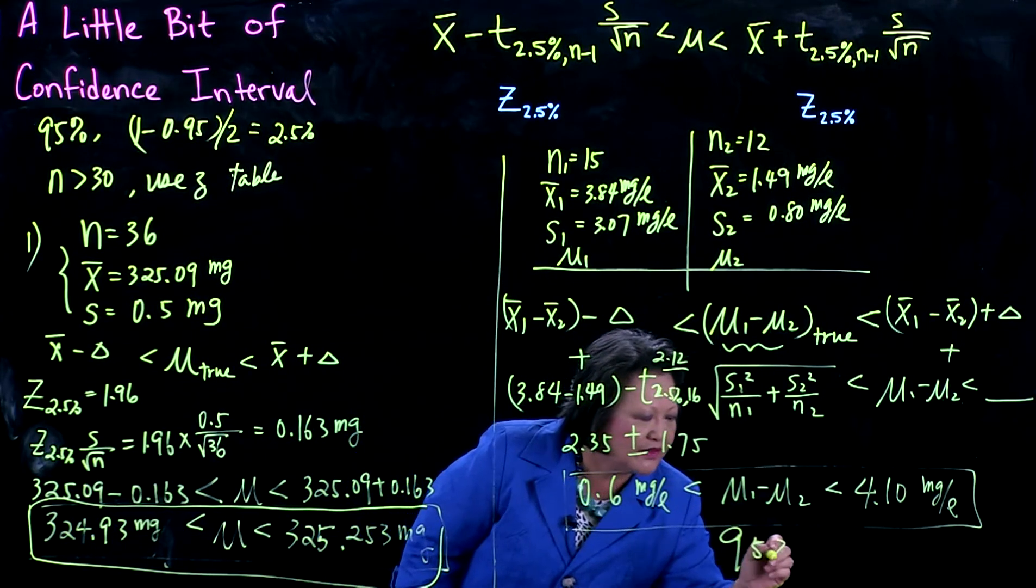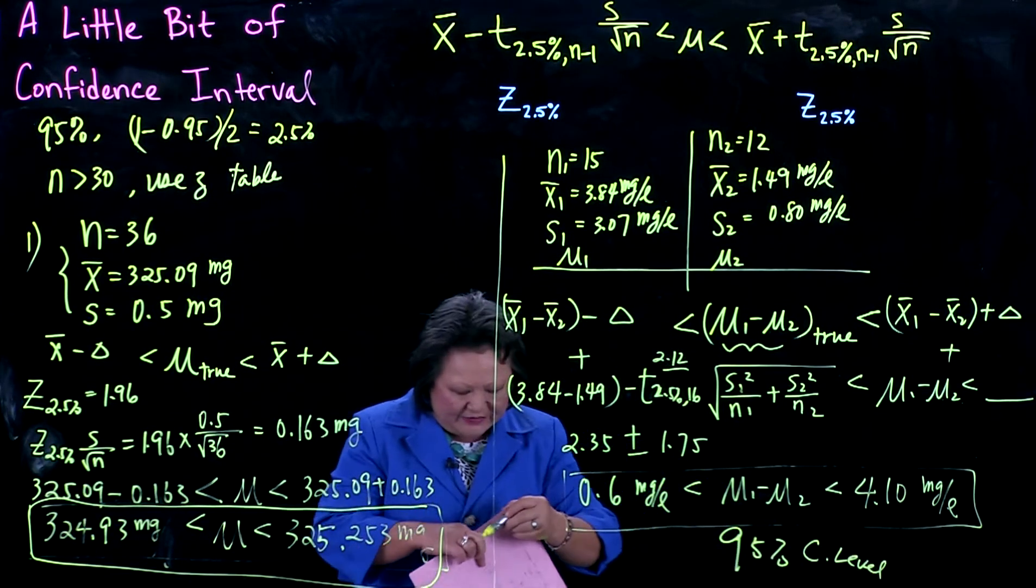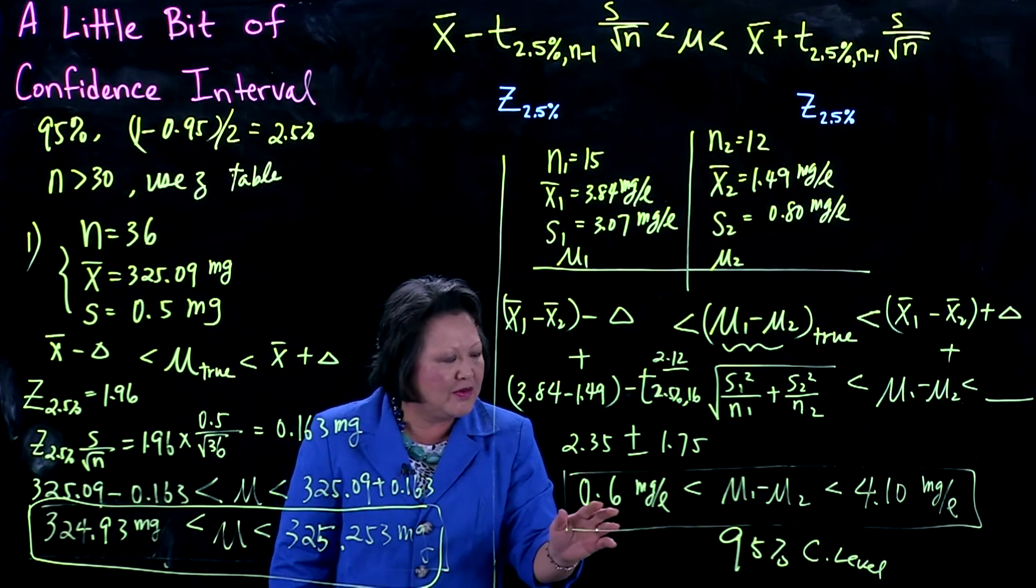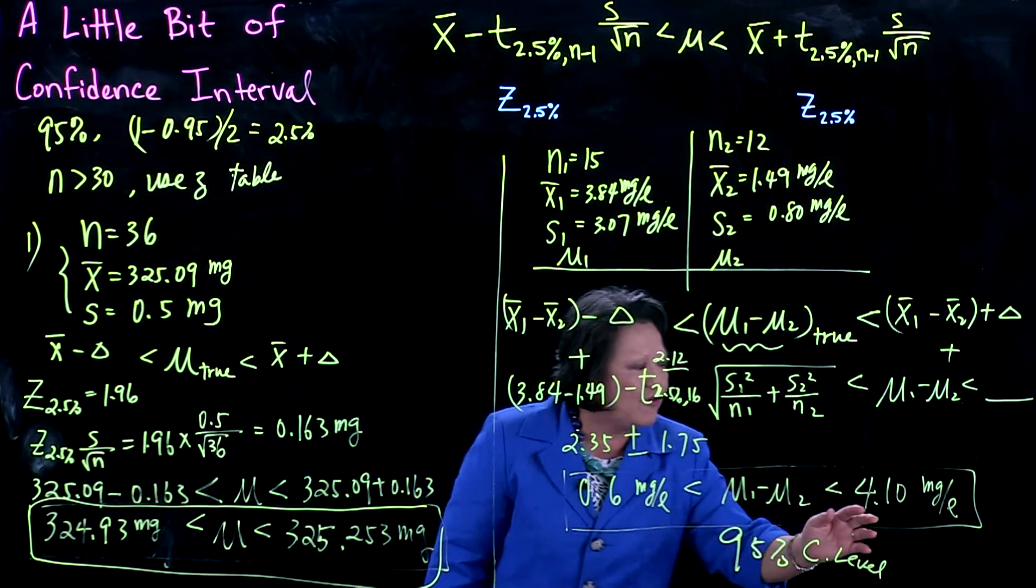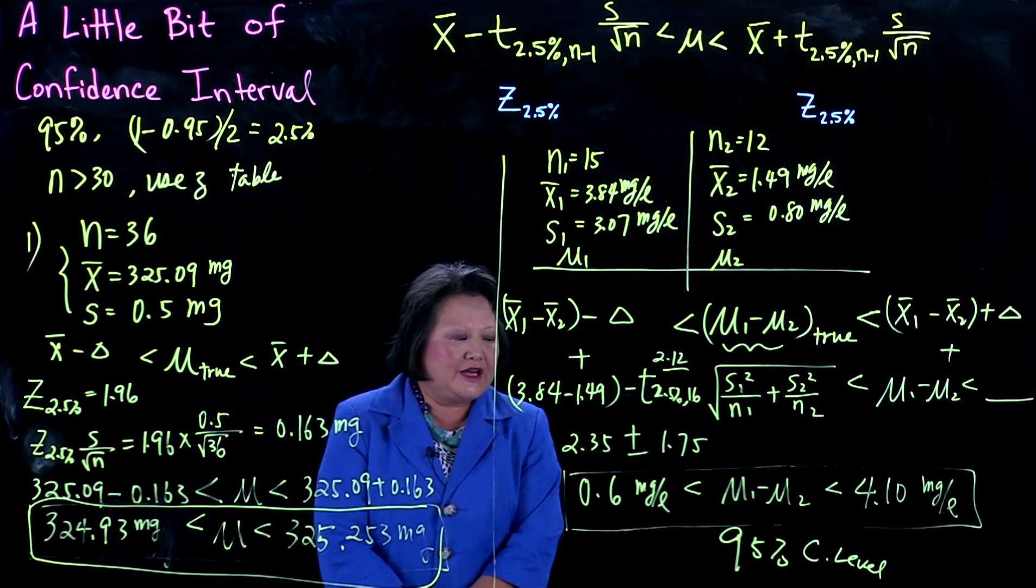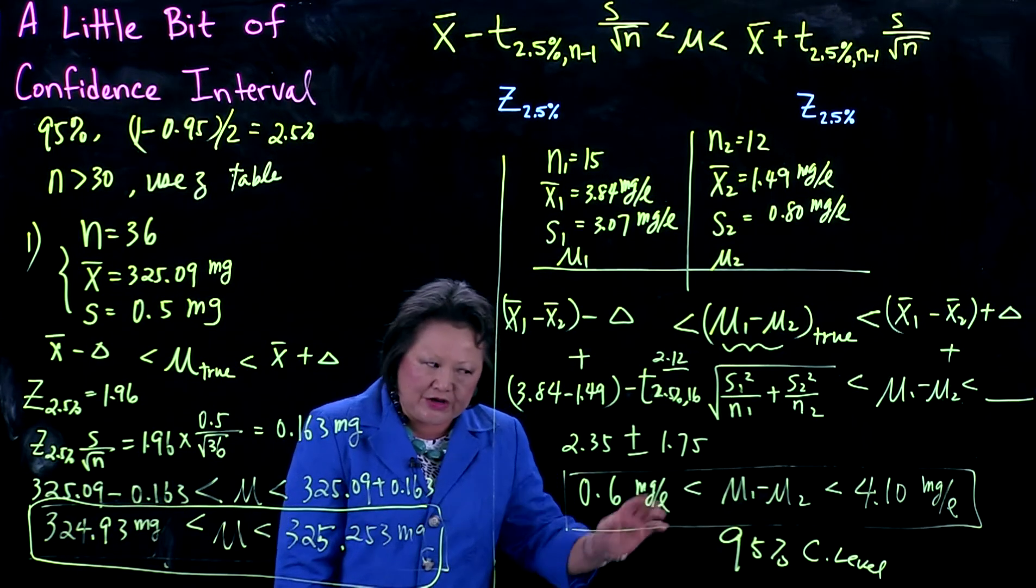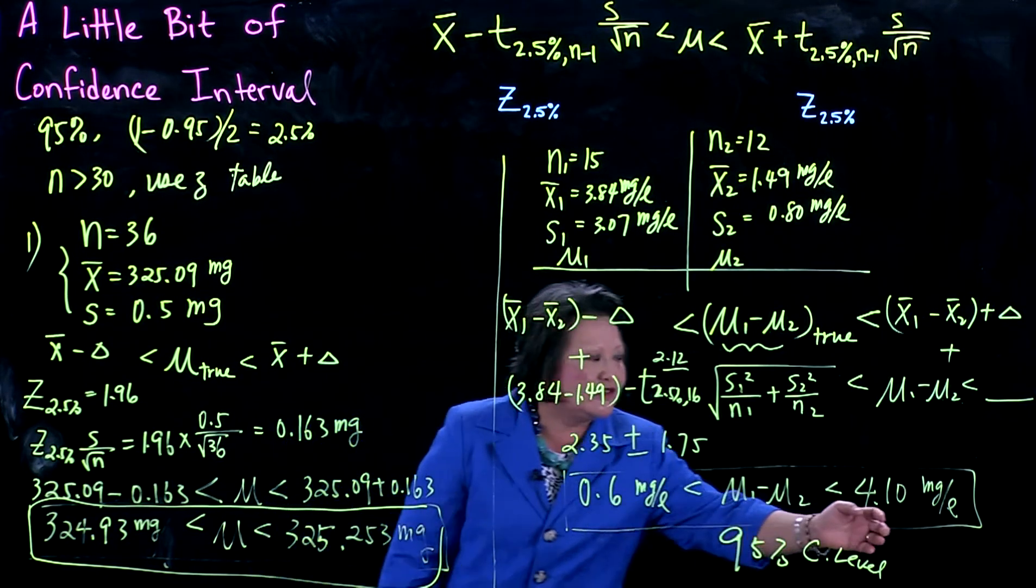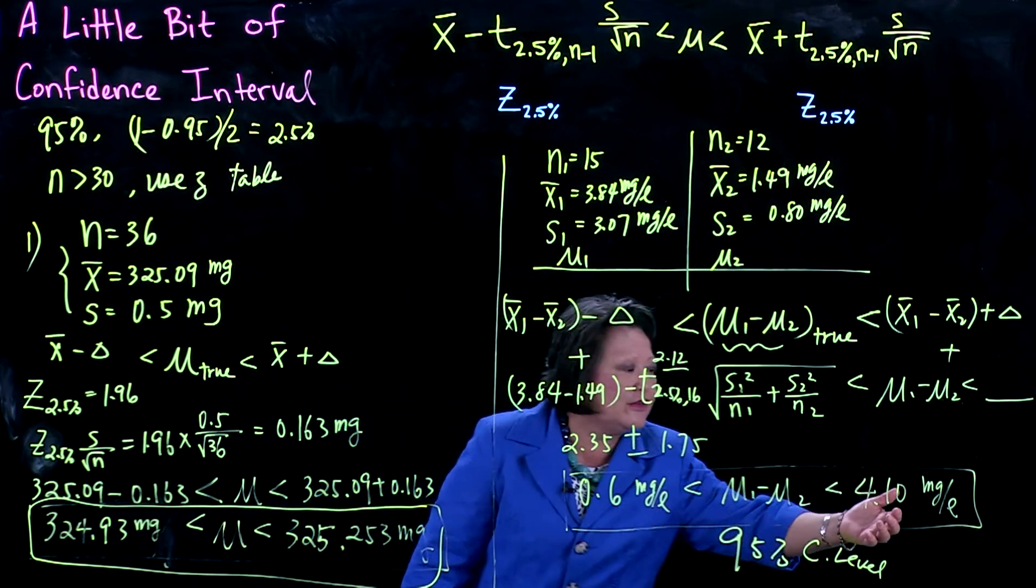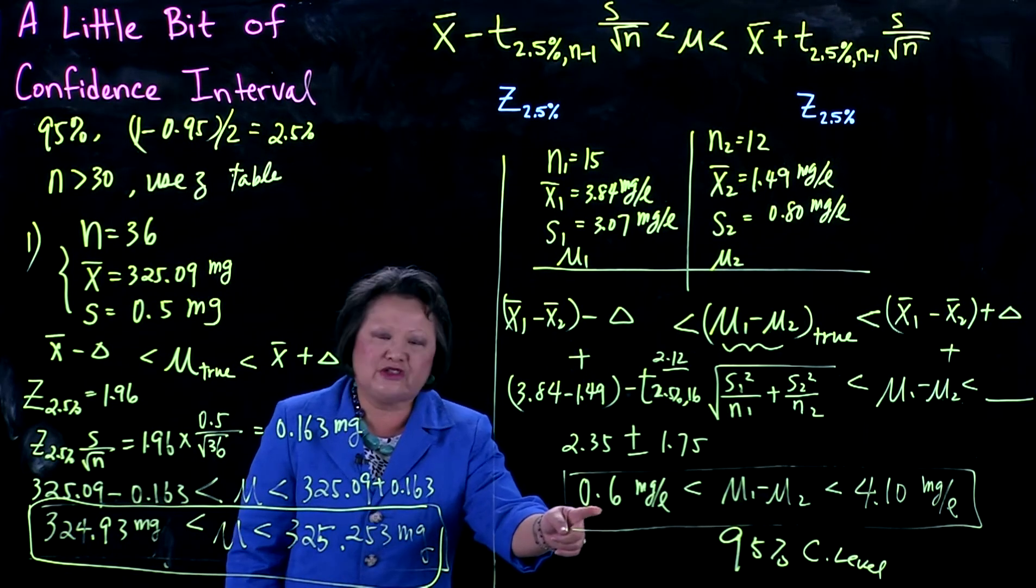I can tell you with 95% confidence that it's somewhere between a reduction of 0.6 milligrams per liter and 4.1. That's a fairly wide variation. Is it somewhere in the middle? No, you cannot say that. All you can say is somewhere between this lower band and upper band—95% confident. It could be 0.7 or 3.9.